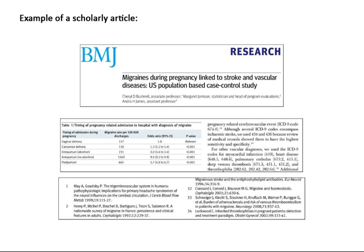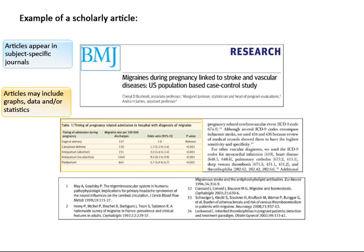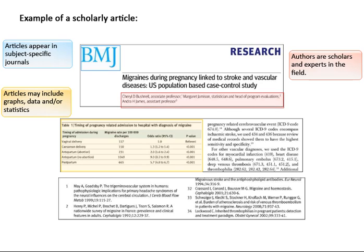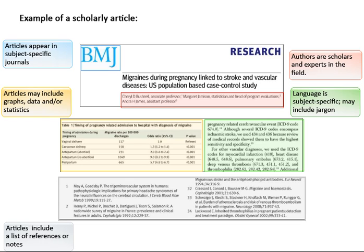Here is an example of a scholarly article. Scholarly articles will appear in subject-specific journals, and they may include graphs, data, or statistics. Authors of scholarly journals are scholars and experts in the field. The language used is subject-specific and may include jargon. Scholarly articles will include a list of references or notes.